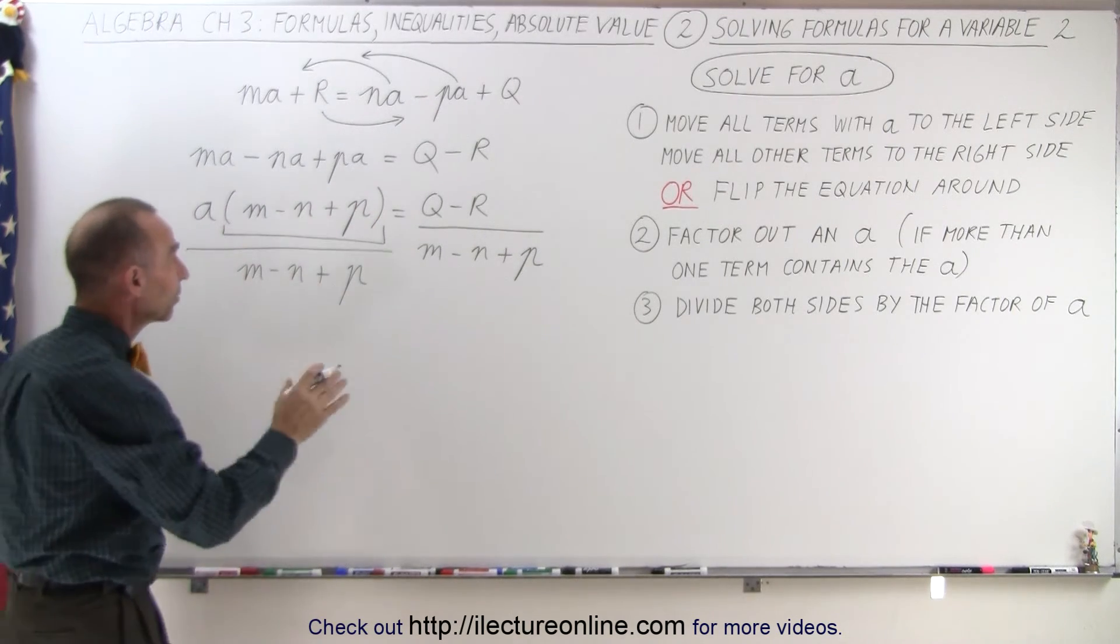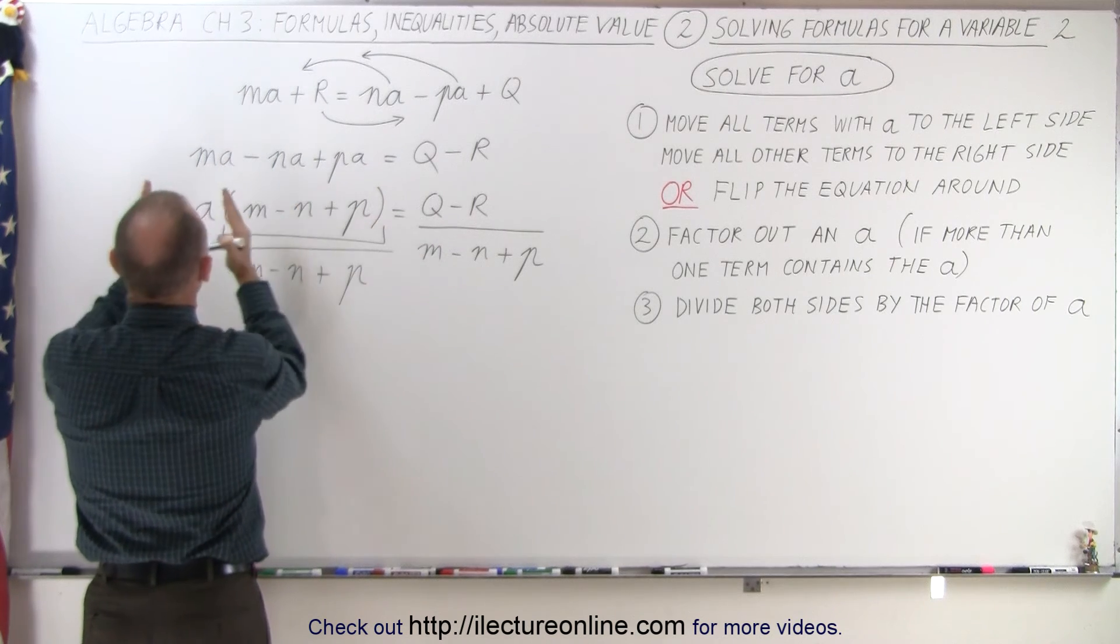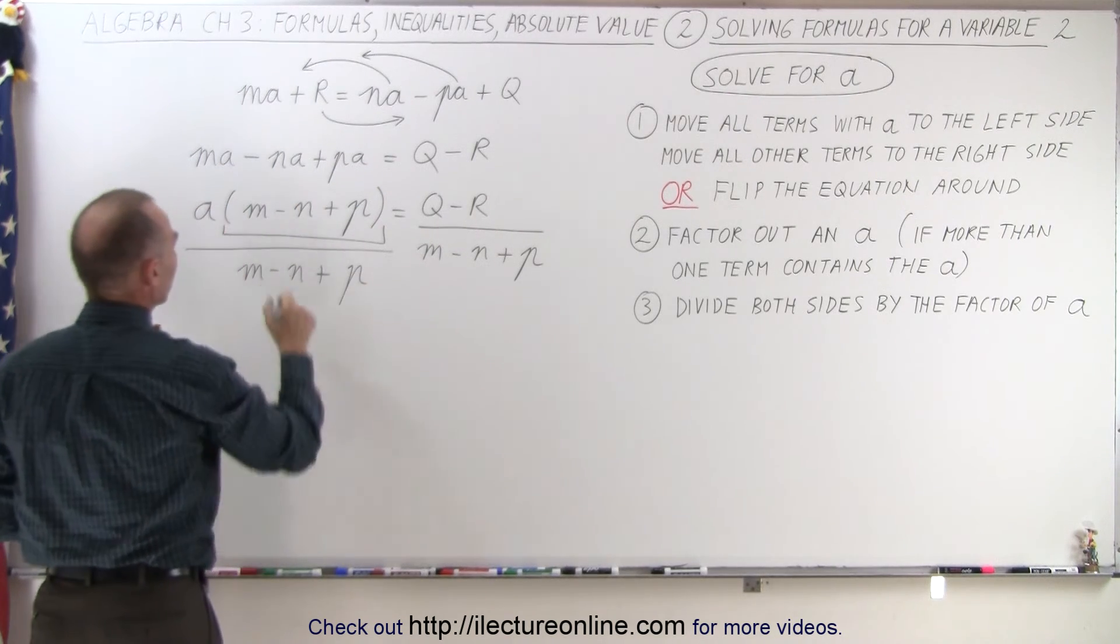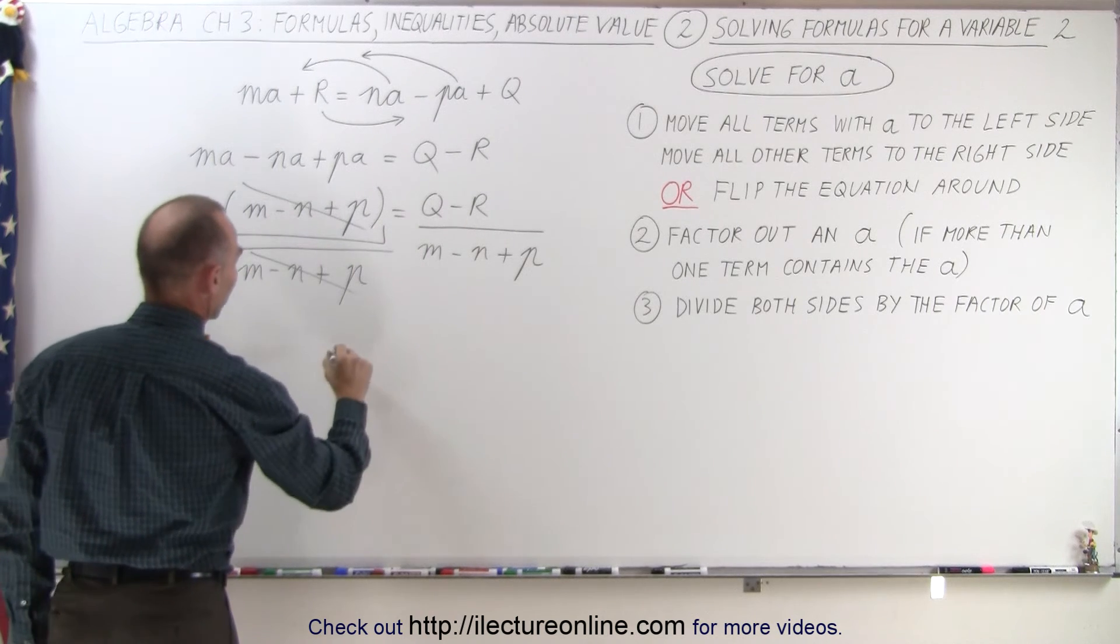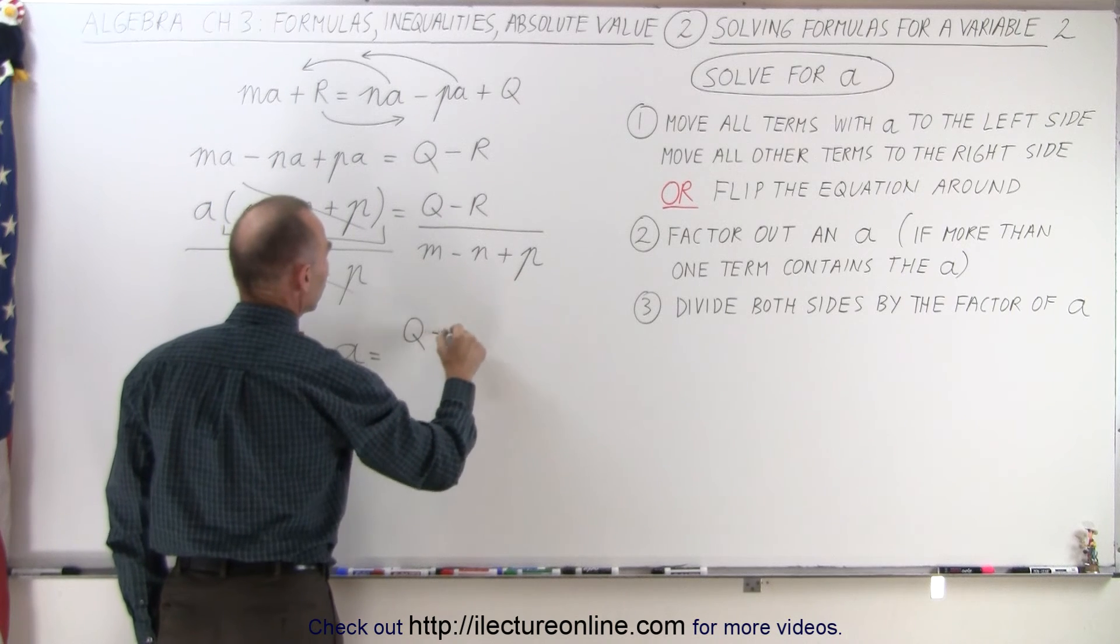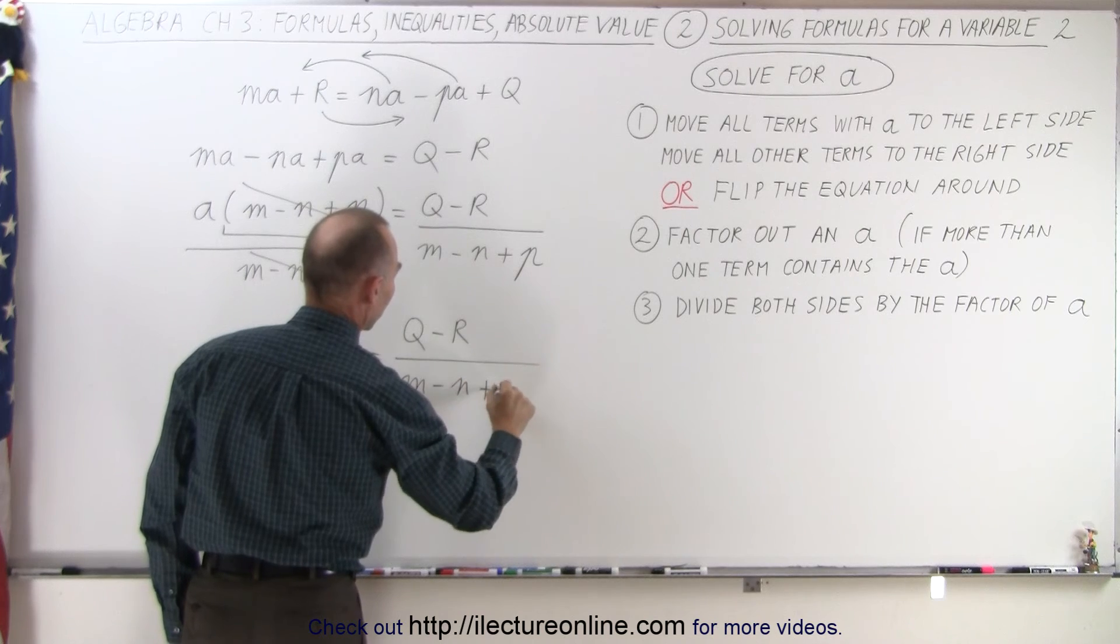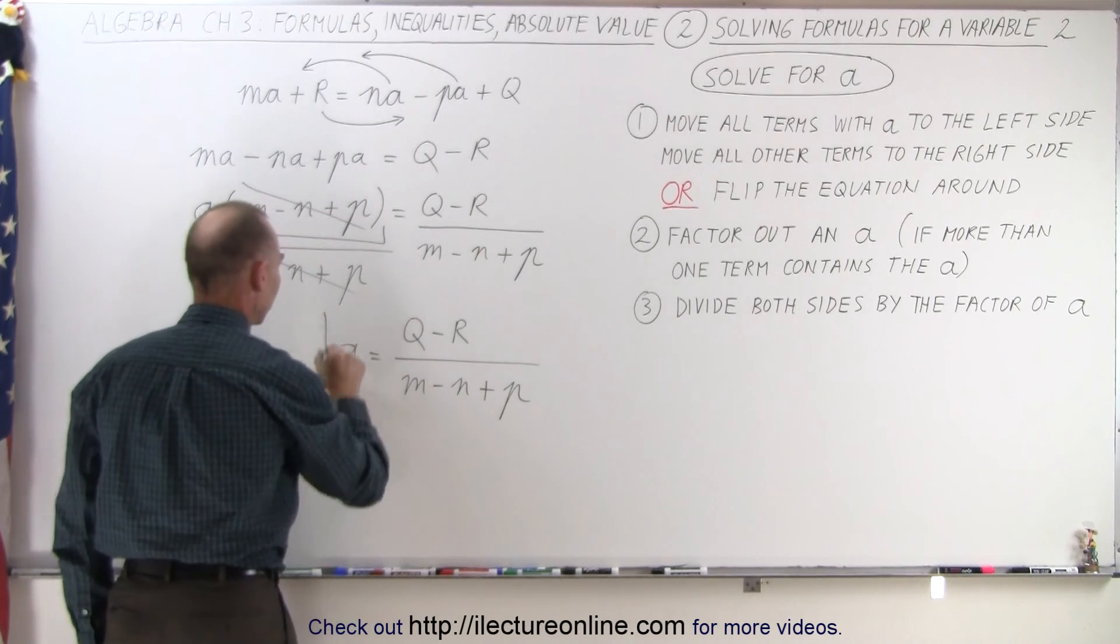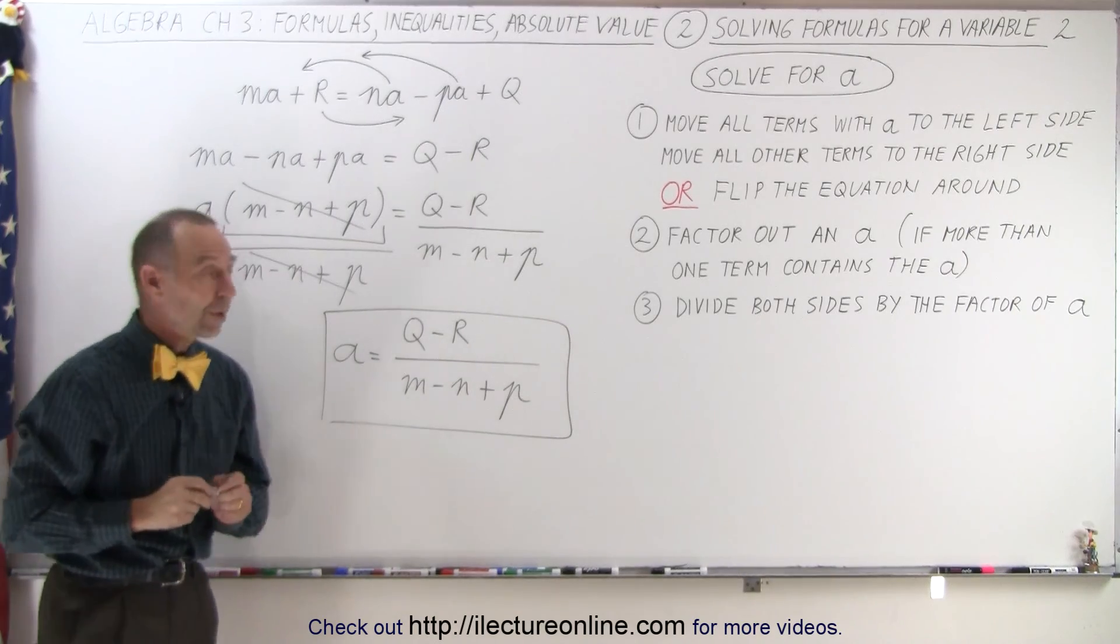So notice we've divided both sides of the equation by the factor, which is everything in the parentheses that's multiplied times A. So now we can see that this and this cancels out on the left side, so we end up with A is equal to, on the right side, Q minus R, divided by M minus N plus P. And this is how we solve for the variable A in that long equation.